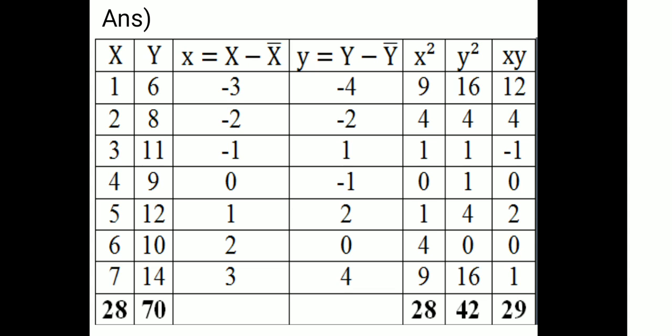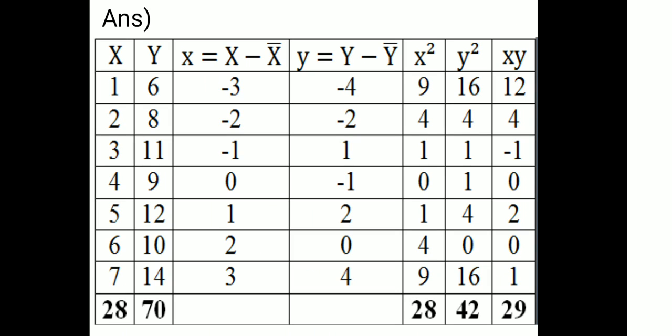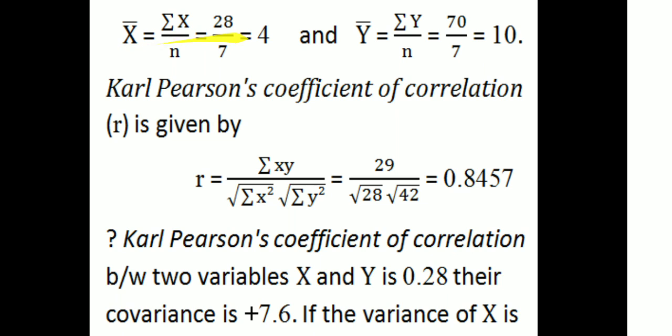Summation y is equal to 70. So x-bar equals summation x by n, which is 28 by 7, equal to 4. y-bar equals summation y by n, which is 70 by 7, equal to 10.